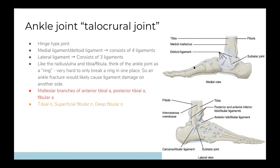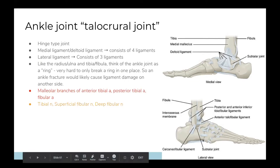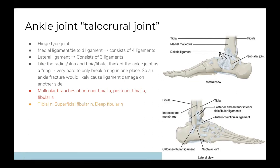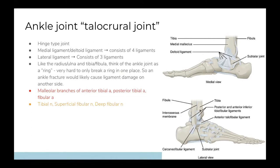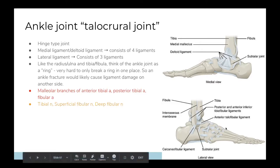On either side of the ankle there is a ligament complex. On the medial side you have the deltoid ligament, comprised of four smaller ligaments connecting the tibia to the tarsal bones. On the lateral side there are three ligaments: one holding the tibia to the fibula at the front and back, one holding the fibula to the talus, and one holding the fibula to the calcaneus. Remember these by their insertion and origin.